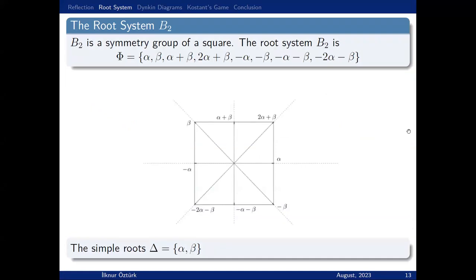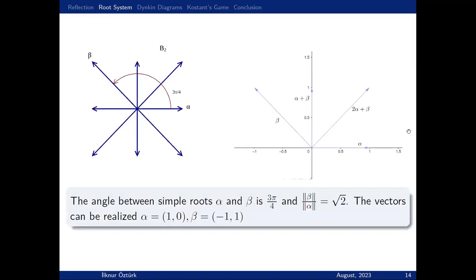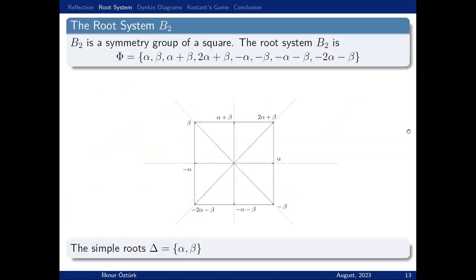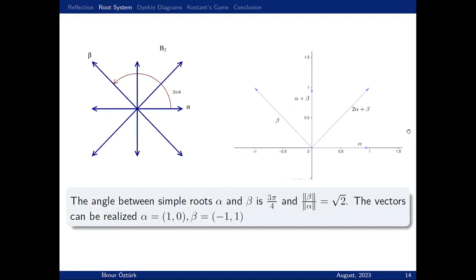You can imagine A2 in R². You can choose some appropriate vectors. This is one example, and you can realize it in R². This is B2. The construction is the same—we choose the symmetry group of a square. You can see the vectors. In that case, the simple roots are alpha and beta. Now in B2, the angle between simple roots is 2π/4, and the ratio of their lengths is √2. Similarly, you can choose appropriate vectors and realize B2 in R².